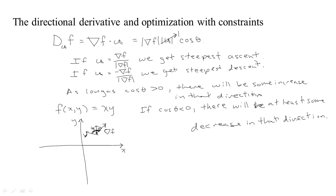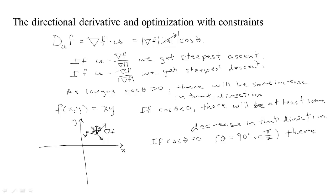And if you go perpendicular — that is, if the angle between the direction you're heading and the gradient is 90 degrees (or pi/2 radians) — the cosine equals zero. In that case you'll be moving along a level set, so there's no increase or decrease as you initially start off in that direction.